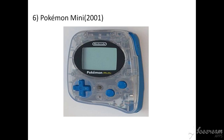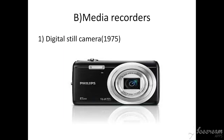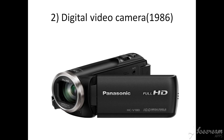The second type of handheld devices is media recorders. The first category is the digital still camera, introduced in 1975. It is a type of camera used to take photographs. Digital cameras use electronics — usually a charge-coupled device (CCD) — to store digital images in computer memory inside the camera. The digital image can be transferred to a computer for later processing.